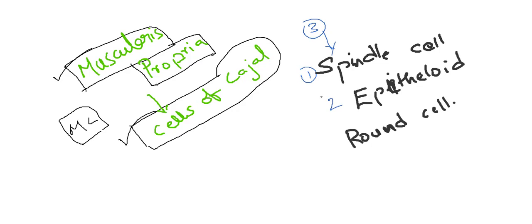There are three patterns of GIST: spindle cell, epithelioid cell, and round cell. Among all these, spindle cell is the most common pattern of GIST.